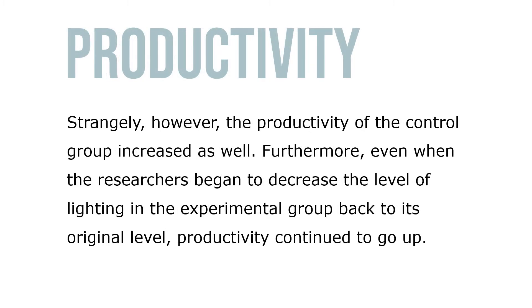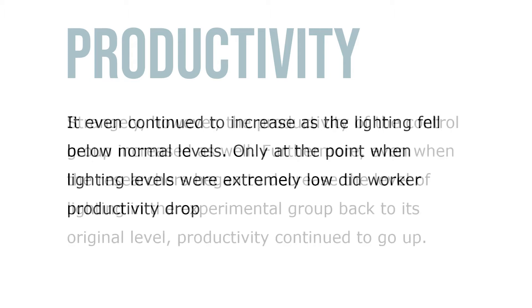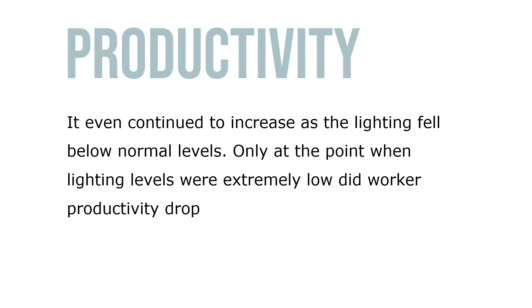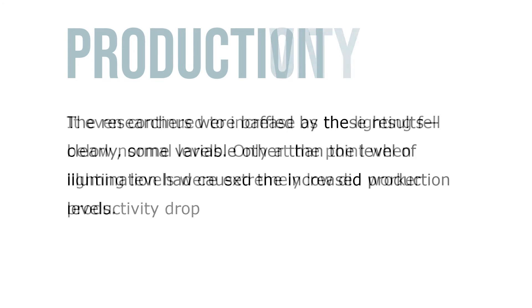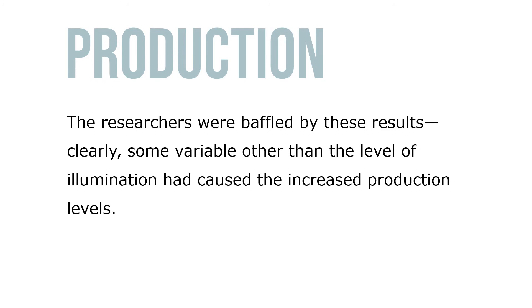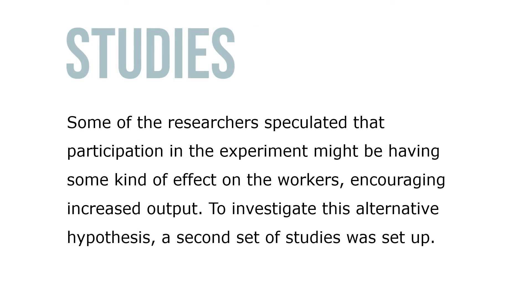Strangely, however, the productivity of the control group increased as well. Furthermore, even when the researchers began to decrease the level of lighting in the experimental group back to its original level, productivity continued to go up. It even continued to increase as the lighting fell below normal levels. Only at the point when lighting levels were extremely low did worker productivity drop. The researchers were baffled by these results — clearly some variable other than the level of illumination had caused the increased production level.